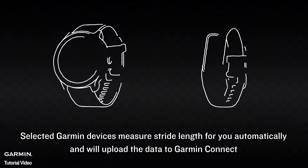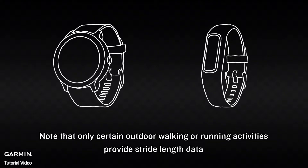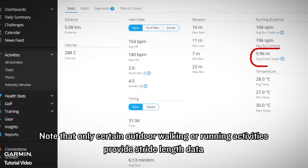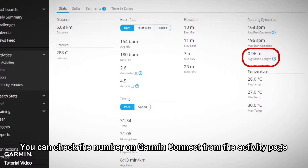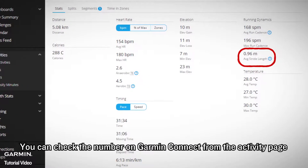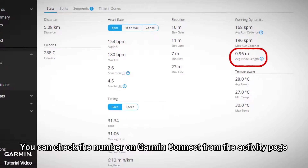Selected Garmin devices measure stride lengths for you automatically and will upload the data to Garmin Connect. Note that only certain outdoor walking or running activities provide stride length data. You can check the number on Garmin Connect from the Activity page.